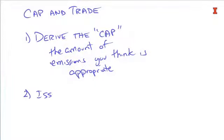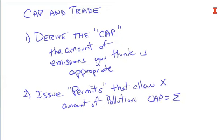Some things we just can't get to zero, but we can limit them. So we come up with a number we think is the right amount. The second step is to issue permits that allow x amount of pollution, where the cap equals the sum of all those permits x sub i for i equals one to n firms in the offending industry. They all get permits giving them the right to emit certain particulate matter. Yes, it sounds like we're selling the right to pollute — and in fact we are, because it's economically infeasible to have none. The third step is we allow trade of the permits.